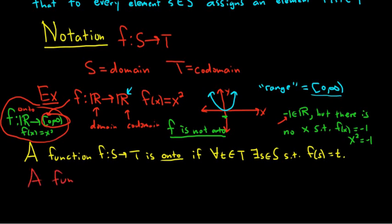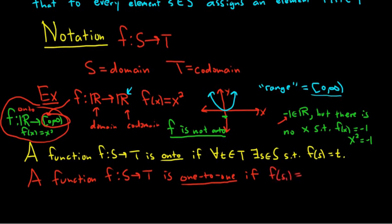A function f from S to T is one-to-one if whenever f of s1 equals f of s2, this implies that s1 equals s2, and this holds for all s1 and s2. Equivalently, we can write the contrapositive: whenever s1 is not equal to s2, then the y-values are not equal to each other.